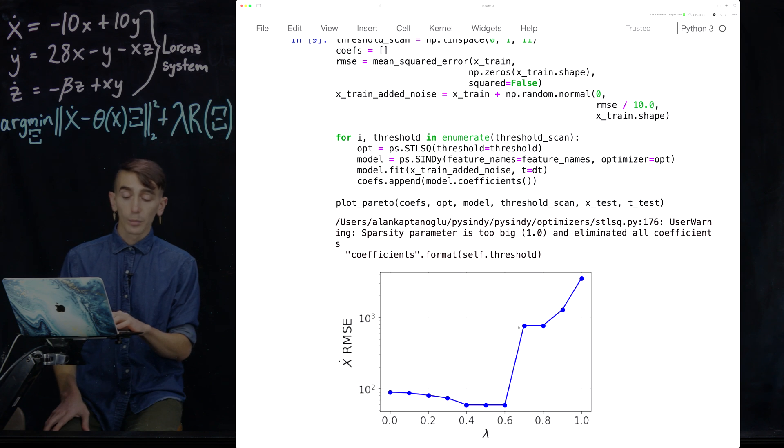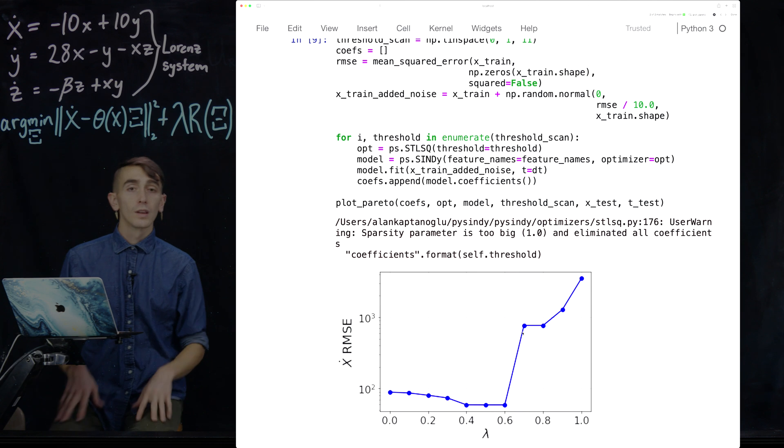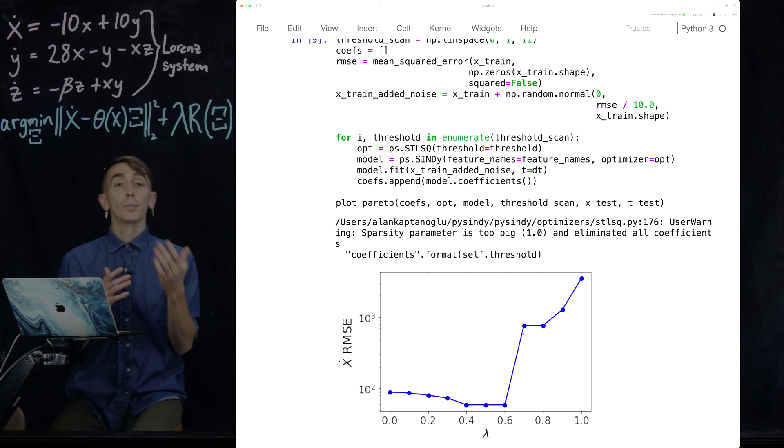But however, at some point you have these big jumps where the error gets much, much worse. And this corresponds precisely to moments where your threshold is chopping off terms in your dynamics that are really important for the dynamical system. So these indicate you sort of have gone too far. And now not only are you not overfitting to noise, but you're actually truncating some of the important dynamics in your system. So you don't want to go too far with your sparsity promotion.